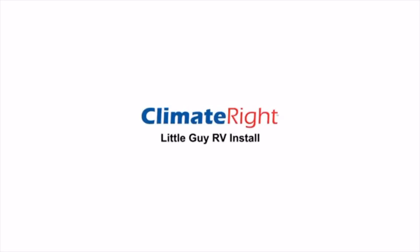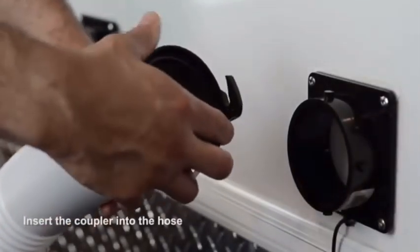In this video, we will cover the ClimateRite LittleGuy RV install. First, insert the coupler into the hose.